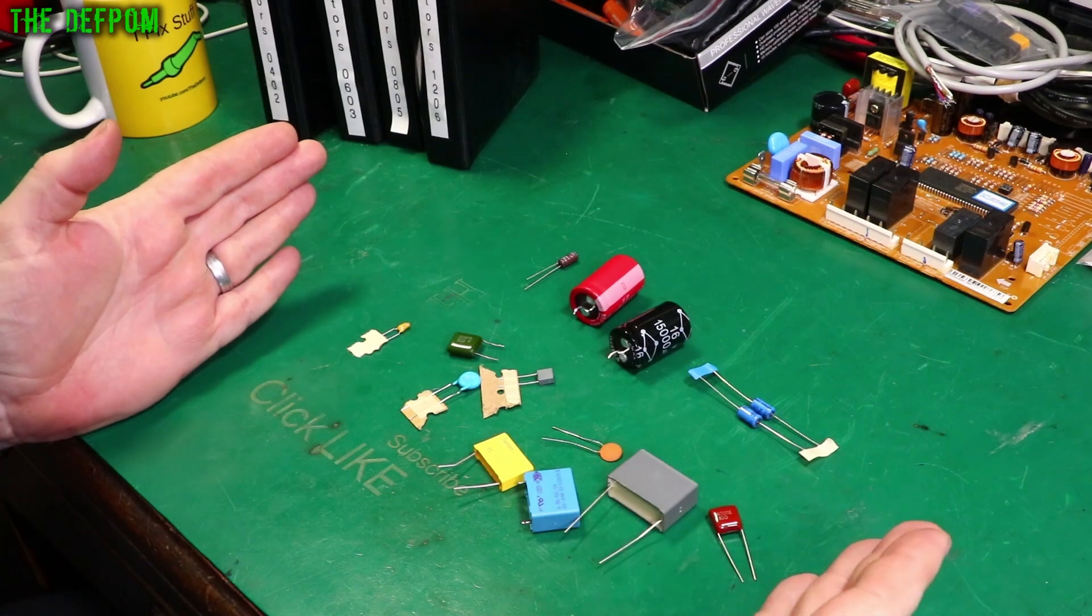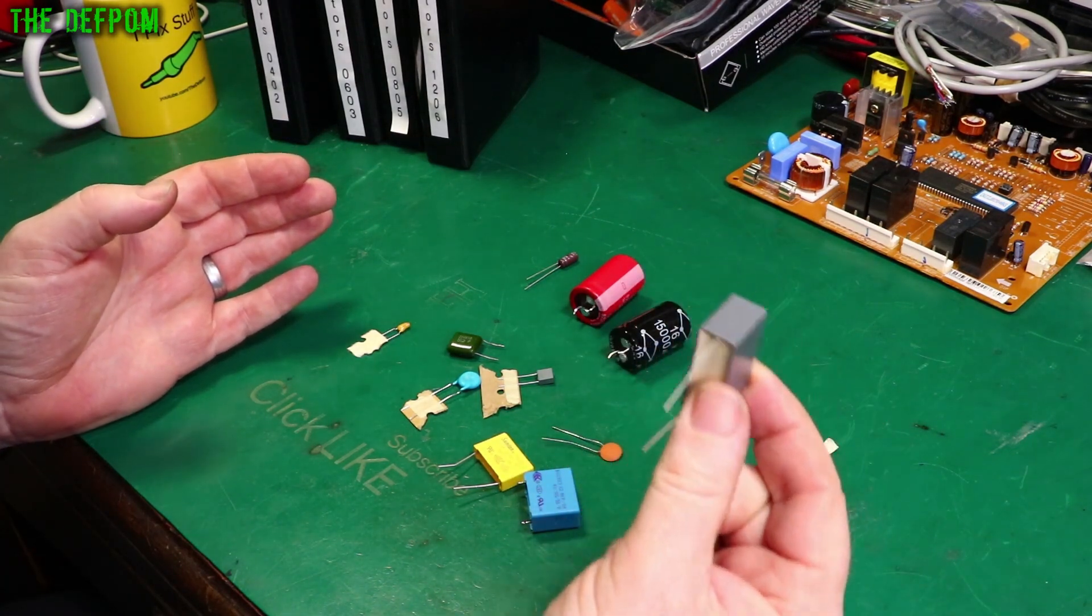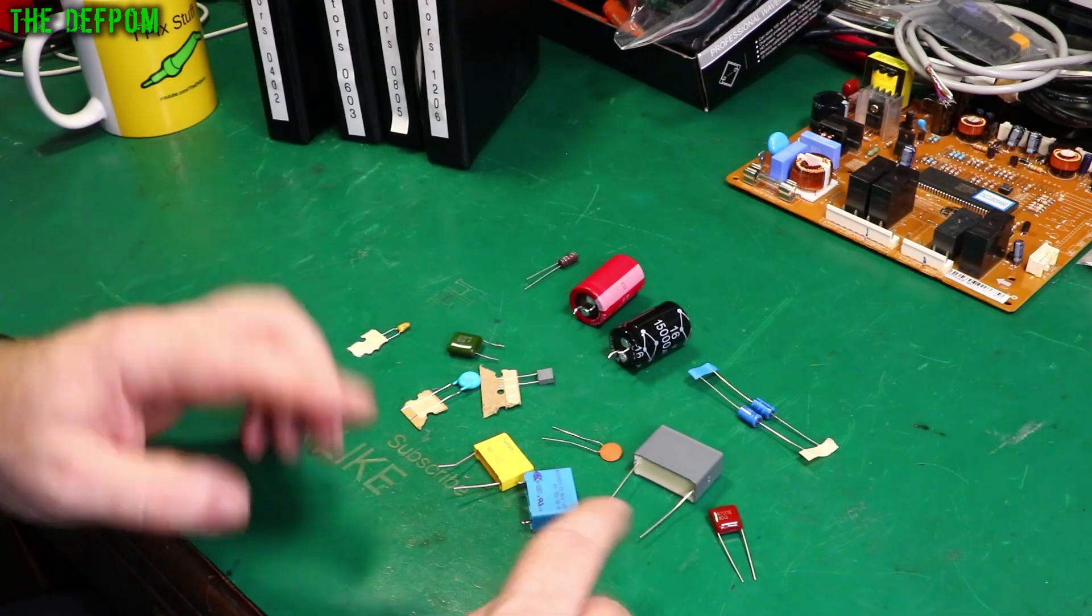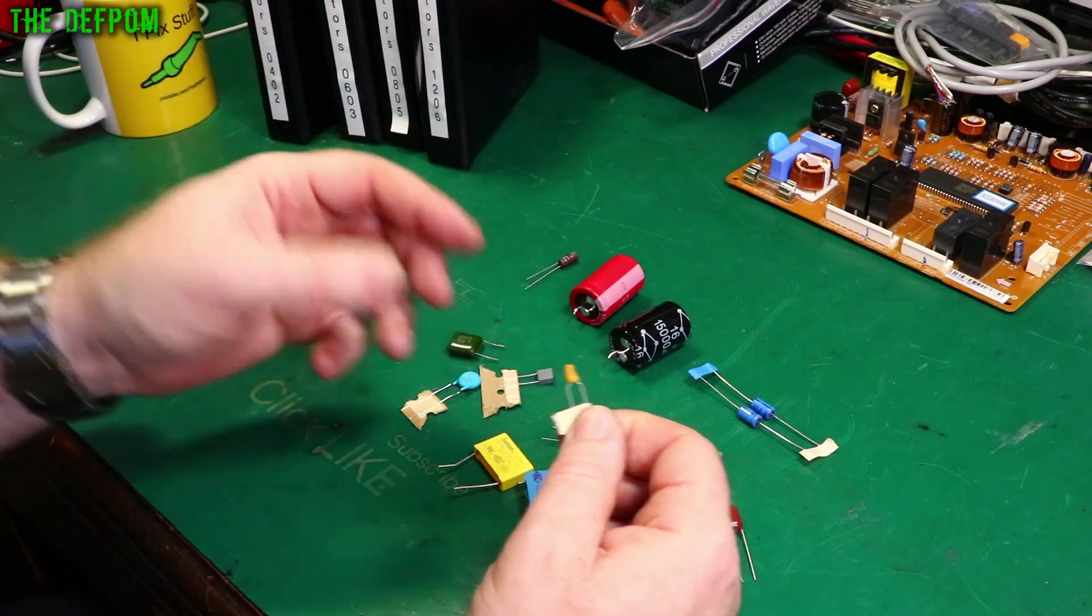Such as their ability to withstand voltage. Like this one here is a 630 volt cap, so it's got a pretty substantial dielectric. Some of these other ones, that dielectric is really thin. That's just a tantalum capacitor. It's got a tantalum dielectric.